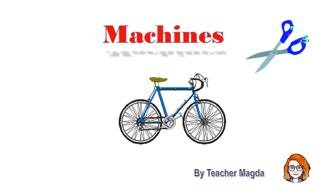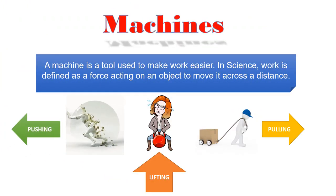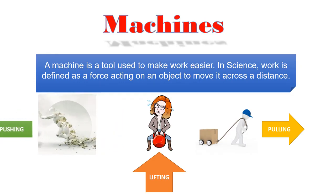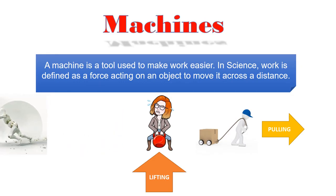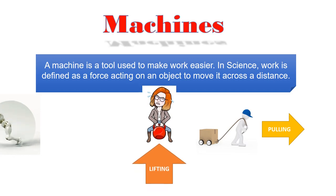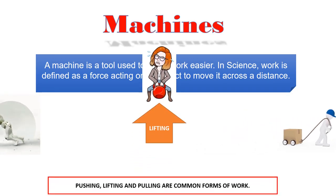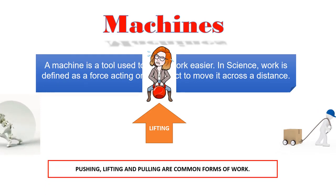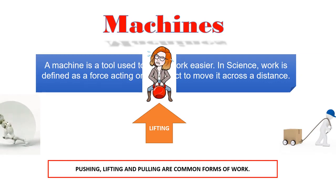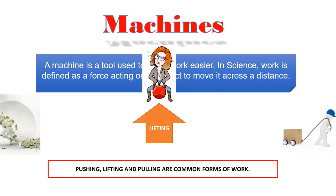Machines. A machine is a tool used to make work easier. In science, work is defined as a force acting on an object to move it across a distance. Pushing, lifting and pulling are common forms of work.